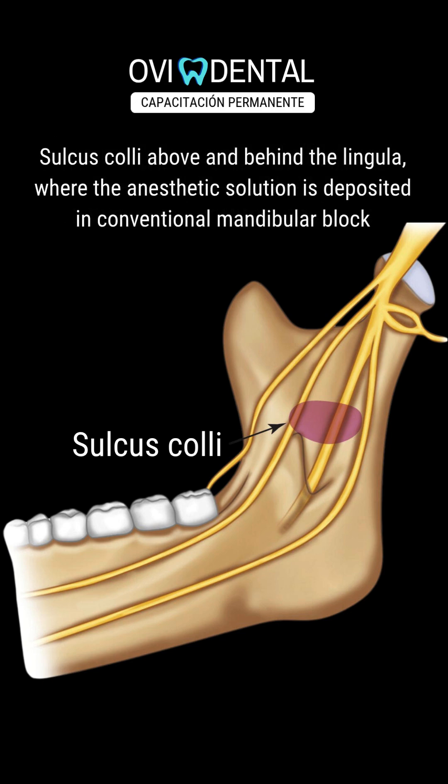The conventional or direct technique, also denominated the classic or standard or inferior alveolar nerve block, is much more commonly used than others worldwide because of its greater efficacy and relative simplicity.